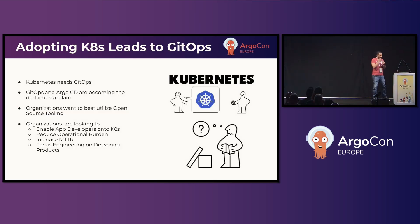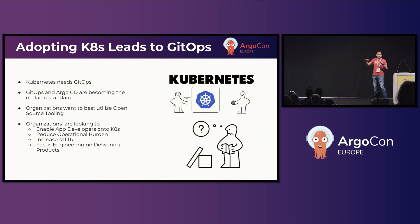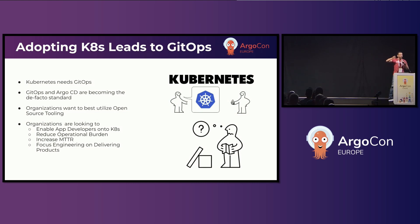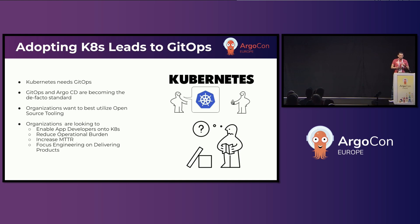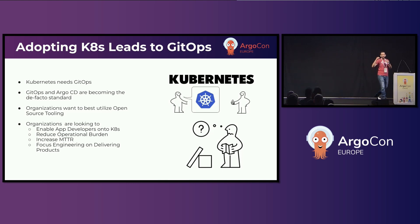As companies further adopt Kubernetes, organizations are looking to improve their processes and utilize this platform — basically utilize Kubernetes to deploy their applications. Which is why GitOps is becoming the de facto standard for operating Kubernetes, and it's effectively part of the reason why Argo is the number three largest project in the CNCF — because Argo enables these organizations to deploy applications, enable GitOps, and manage Kubernetes at scale.